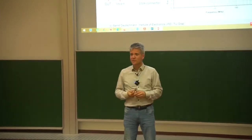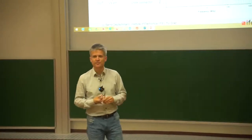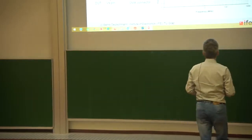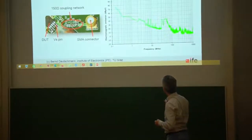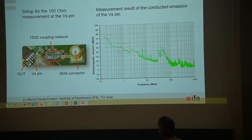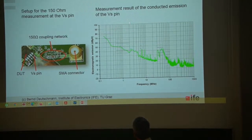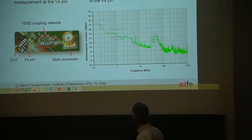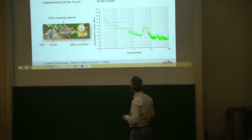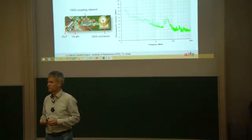Looking at this diagram, what do you think is the internal switching frequency of the charge pump? This can be directly seen from the diagram. The first peak that can really be seen is here at around 2.3 megahertz, and then we should see all the harmonics. For this device, the internal switching frequency of the charge pump is in the range of 2.5 megahertz.